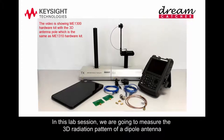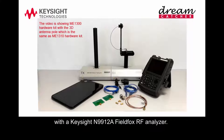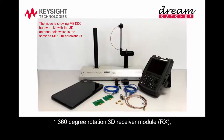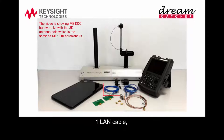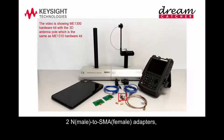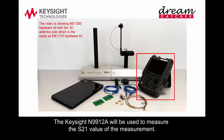In this lab session, we are going to measure the 3D radiation pattern of a dipole antenna by using the Dreamcatcher ME1310 antenna and propagation training kit, with a Keysight N9912A field FOX RF analyzer. The ME1310 antenna and propagation training kit consists of 1 transmitter module, 1 360-degree rotation 3D receiver module, 2 2400 MHz dipole antennas, 2 RF coaxial cables, 1 LAN cable, 1 Type A to Type B USB cable, 2 straight SMA male to SMA male adapters, 1 right angle SMA female to SMA female adapter, 2 N male to SMA female adapters, 1 5V power adapter, and a PC with the RADPAT software installed. The Keysight N9912A will be used to measure the S21 value of the measurement.